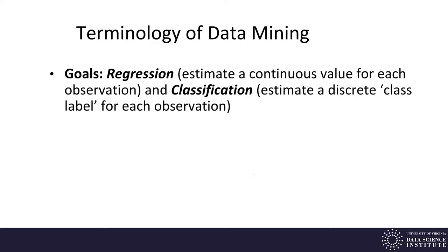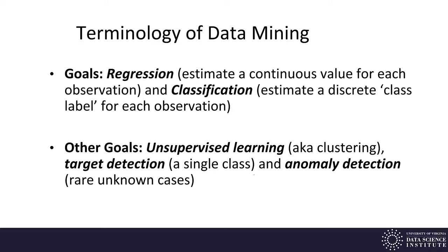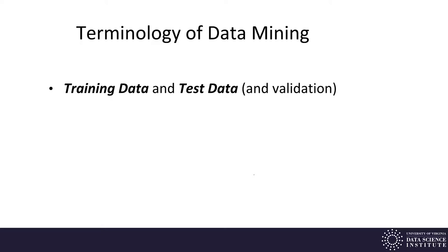A bit more terminology: we've talked about regression — the prediction problem with continuous-valued outputs — and classification, where outputs have a class label. Other goals in data mining include unsupervised learning or clustering, which groups data not based on given output labels but on basic similarities in the data. There's also target detection, a subclass of classification where we're trying to detect one specific class — for example, detecting patients with cancer versus non-cancer. And anomaly detection, where we're trying to find things that are rare and unusual. Training data is the data you create your model from, and test data is used to test whether your model generalizes to data it hasn't been trained on.